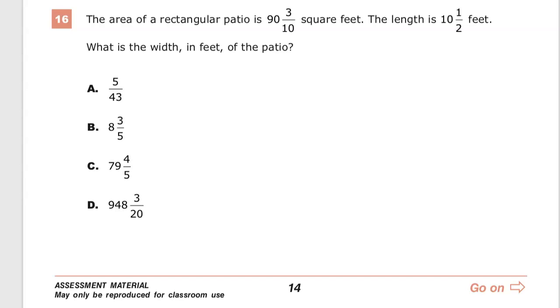The area of a rectangular patio is 90 and 3 tenths square feet. The length is 10 and 1 half feet. What is the width in feet of the patio?